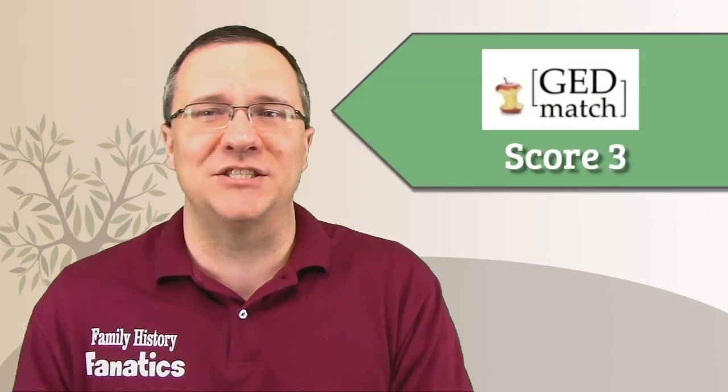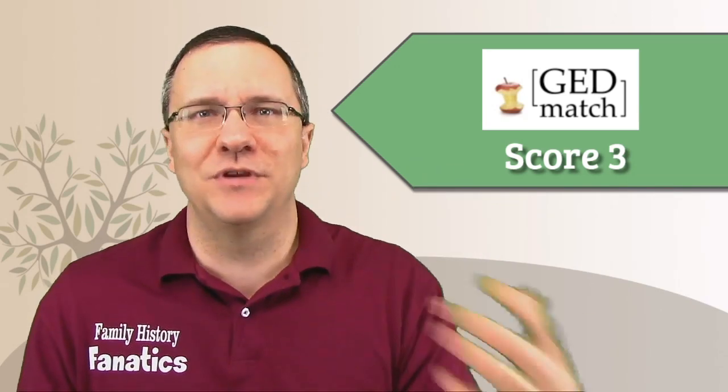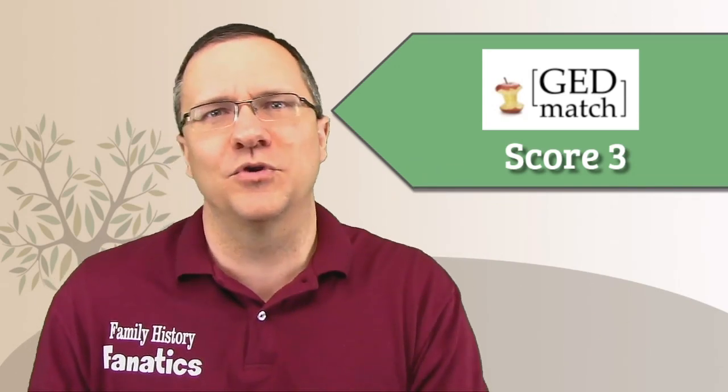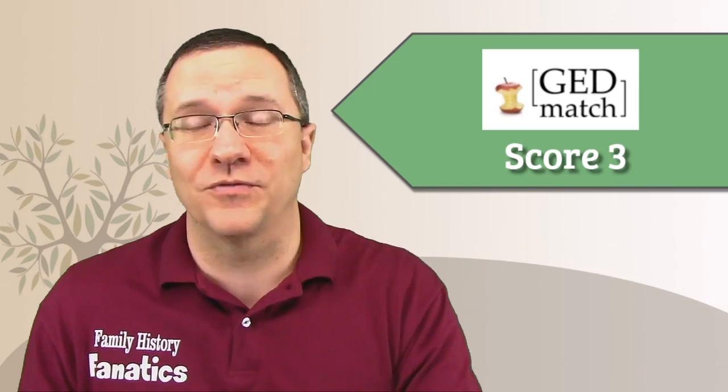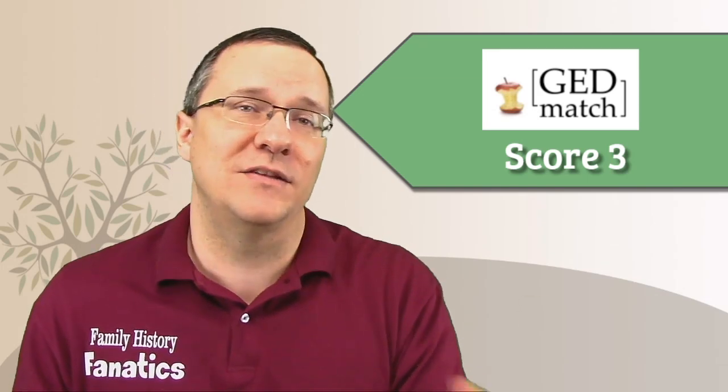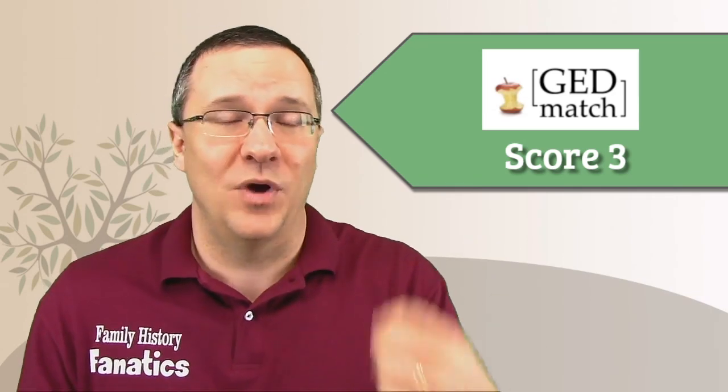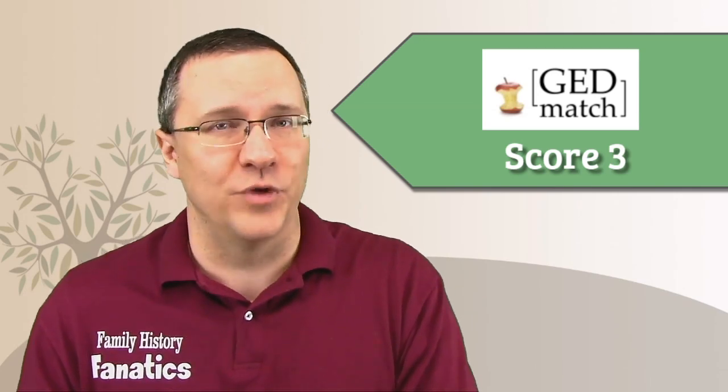So who's going to be the winner? Well it's actually GEDmatch is the winner. They get a score of three and that's just because they have several different tools all that can be used for triangulation and some of these tools are free. Some of them you can pay for on their tier one but you can triangulate segments with any of your kits with other people on GEDmatch and that's why they get a score of three.